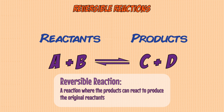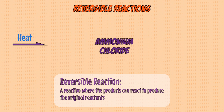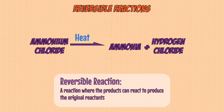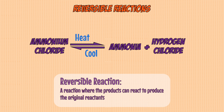Reversible reactions are represented with a double-ended arrow to show the reaction can go both ways. The top arrow pointing right represents the forward reaction and the bottom arrow pointing left represents the backward reaction. A real-life example is ammonium chloride: when heated, it breaks down into ammonia and hydrogen chloride gas in the forward reaction.